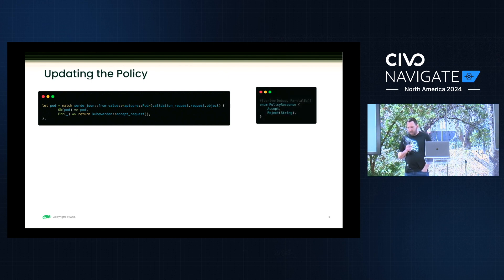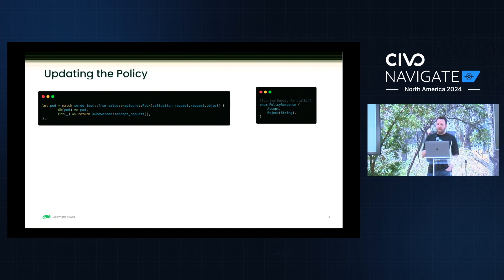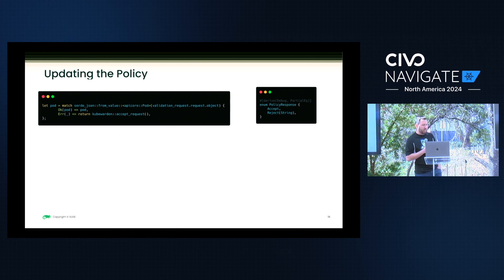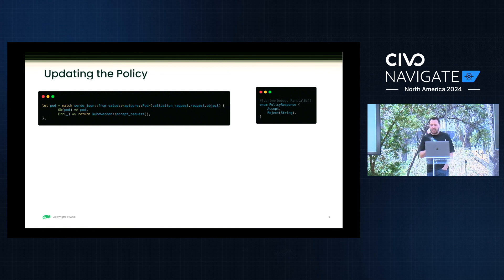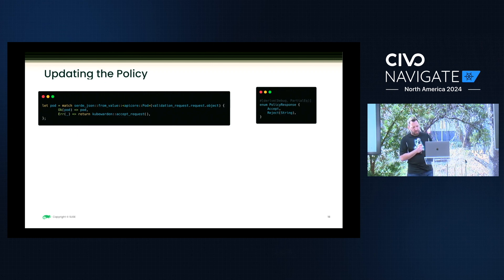I talked about the four states: mutate, accept, reject, and monitor. In this enumeration you need to tell Kubewarden your particular response. If I accept it, I'm taking it as-is and not saying anything. If I reject it, I pass a string to explain why I'm rejecting this particular policy.